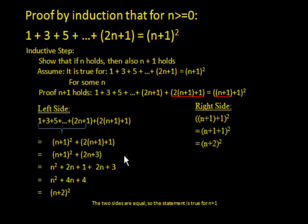Now if we continue to solve that, we would get n squared plus 2n plus 1 plus 2n plus 3, which you can then add the terms together, and then you would end up with n plus 2 squared.